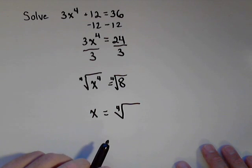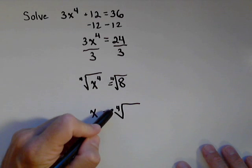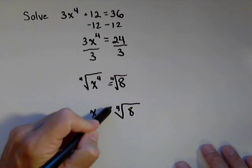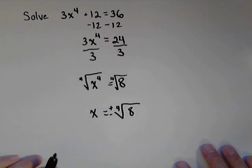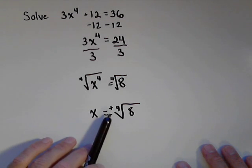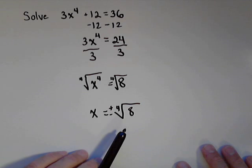Now because this was an even number, we do have to account for both the positive and negative solutions. And that will actually account for all our solutions. Positive fourth root of 8, negative fourth root of 8.